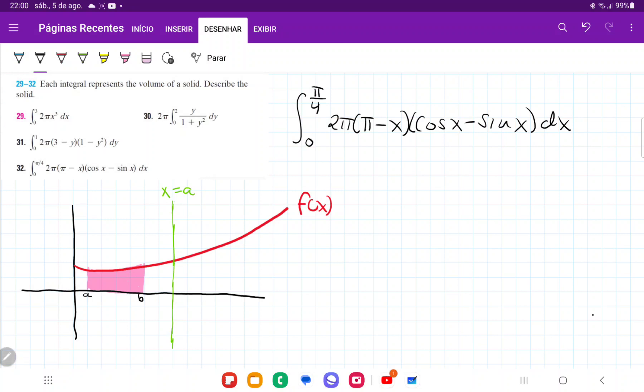So let's see what happens when we take the area beneath a curve, generic curve f of x. This is the area from a to b, and we revolve it about a generic line x is equal to a.